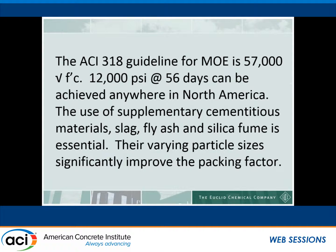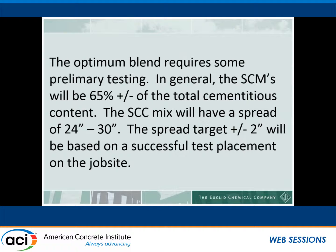The ACI 318 guideline for modulus of elasticity is 57,000 times the square root of F prime C. 12,000 PSI at 56 days can be achieved anywhere in North America. The use of supplementary cementitious materials — fly ash and silica fume — is essential. Their varying particle size helps improve the packing density, which is important for self-consolidating concrete. SCMs will generally be 65% plus or minus of total cementitious content, and the SCC mix will have a spread of 24 to 30 inches with a target of plus or minus 2 inches.